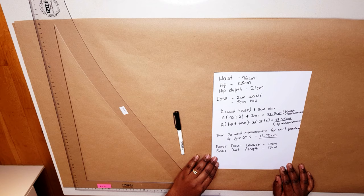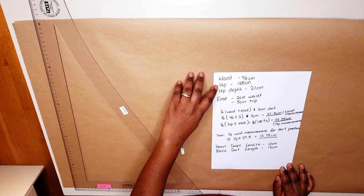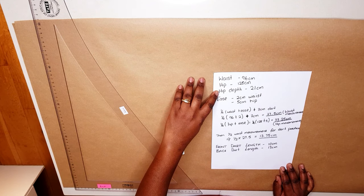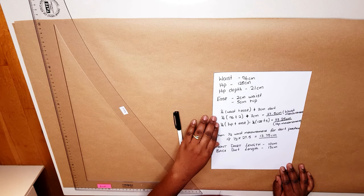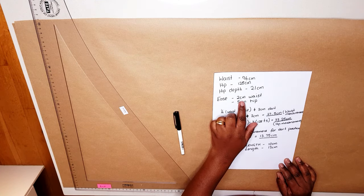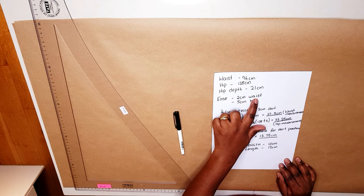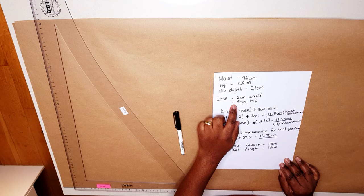There are a few measurements you need to take beforehand: the waist measurement, the hip measurement, and the hip depth measurement. Hip depth is the measurement between your waist and your lower hip, which is the fullest part of your hip. You also need to decide the amount of ease. I'll be using two centimeters for my waist and two centimeters for my hip. These measurements make it possible for us to walk and sit comfortably in our skirt.